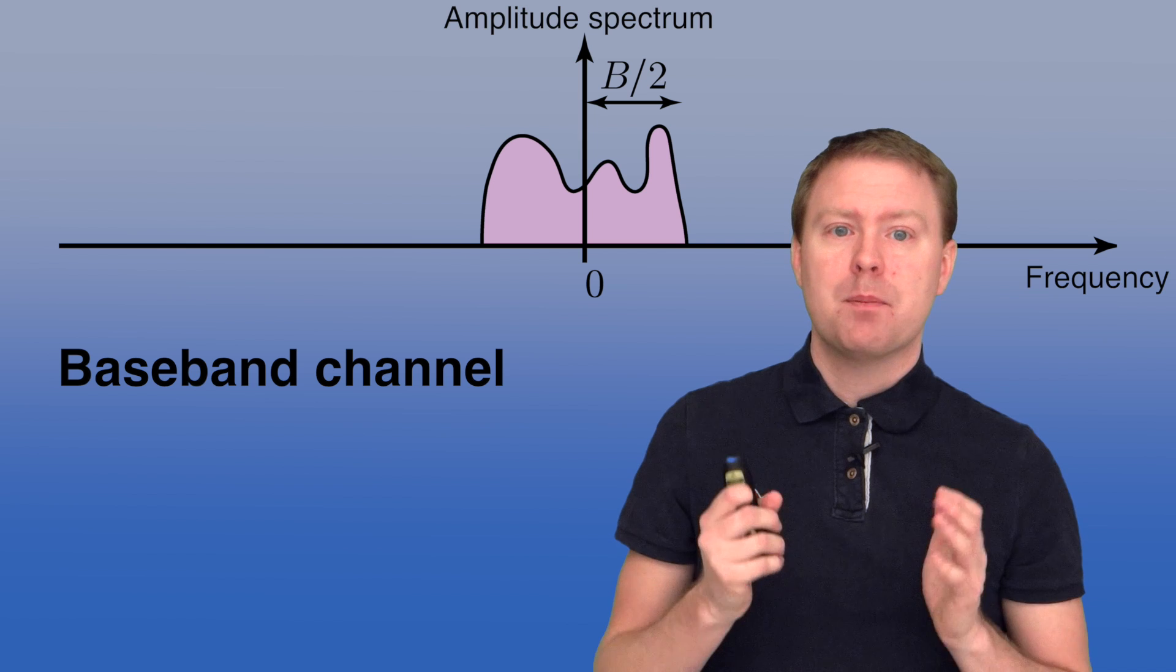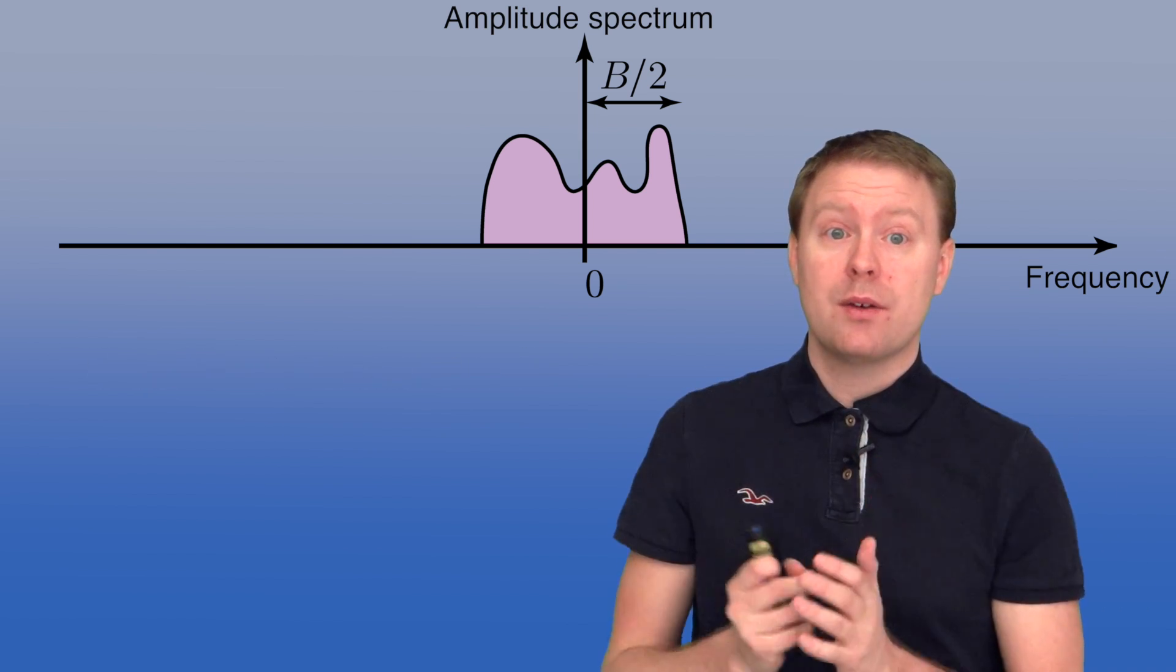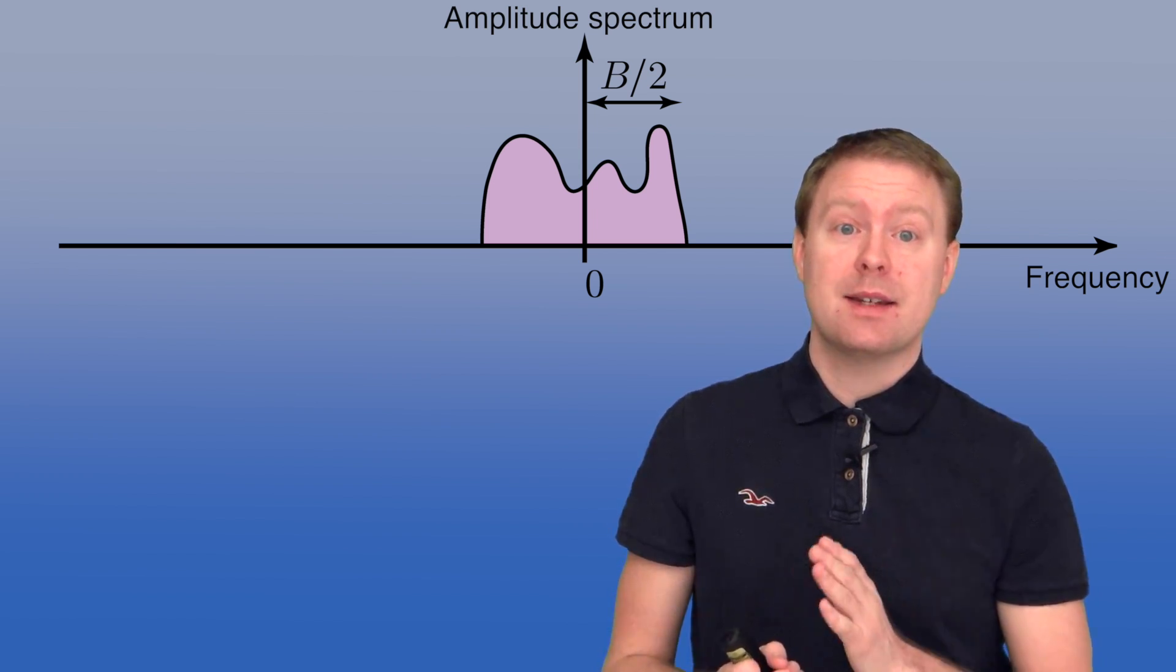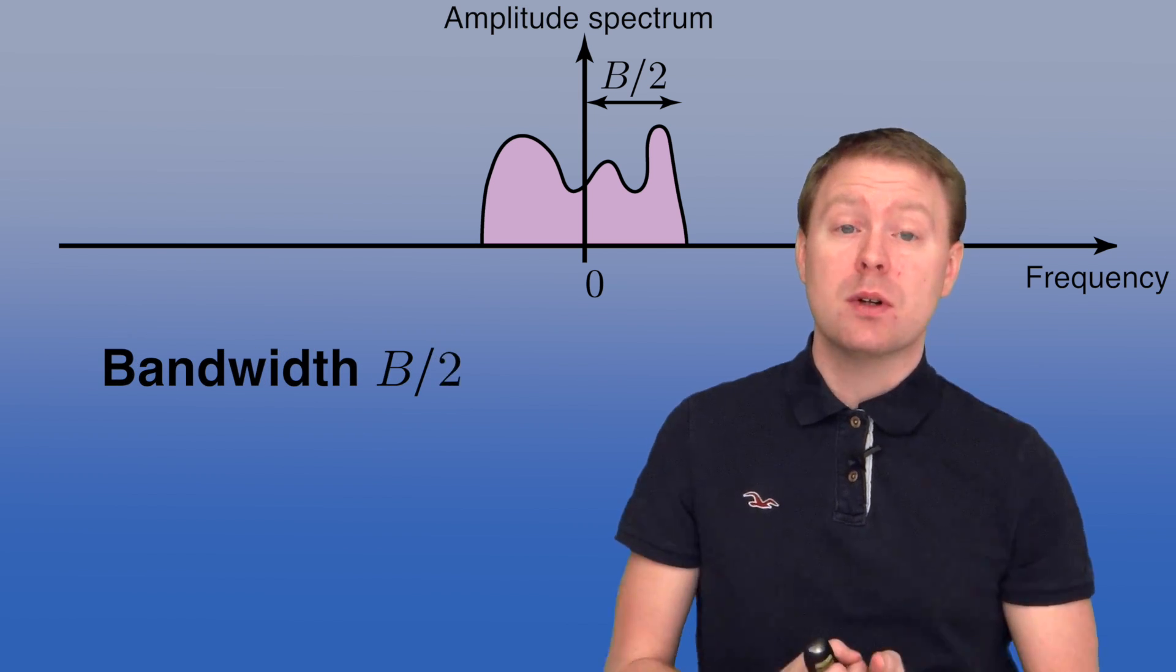And in the baseband, bandwidth decreases. So since we are centering it around the zero frequency and the bandwidth should count as the distance between zero and the larger frequency, we only have a B over 2 bandwidth now.